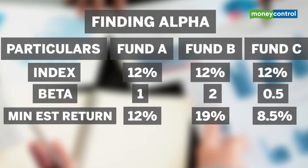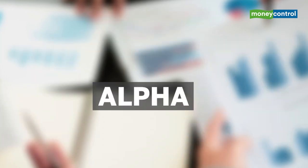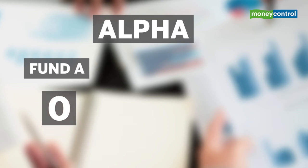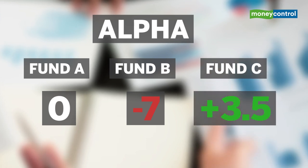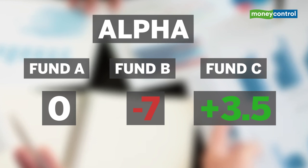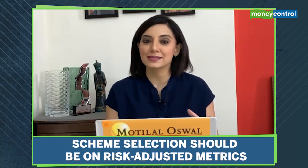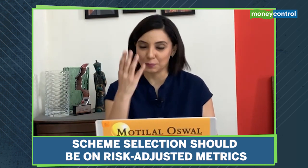So if all three funds deliver 12%, then the alpha of fund A is 0, alpha of fund B is minus 7, and fund C, which optically had delivered the lowest return, is actually the only one able to deliver alpha. Fund B is the rank underperformer, considering it had taken the maximum risk. It is incorrect to think of alpha as just the excess return a fund has delivered compared to its benchmark. When selecting a fund, it is important to see the returns in comparison to the risk that has been taken, and beta is a figure which is now easily available online. So next time you are checking a fund, do look at the risk-adjusted returns.